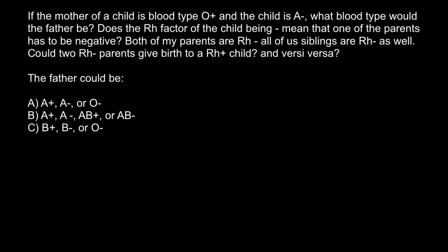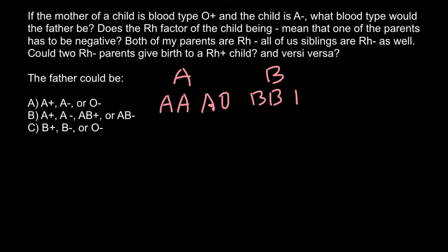As you know, there are four blood groups. The first one is blood group A, made by two genotypes: AA and AO. Another blood group is B, also made by two genotypes: BB and BO. Another blood group is AB, and only one genotype makes this blood group: AB. The last blood group is O, and one genotype makes this blood group: OO.